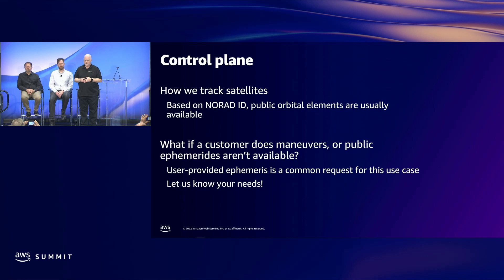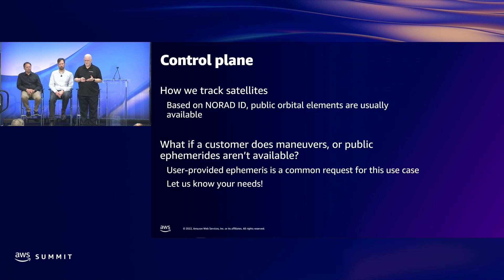Many customers ask us how we track satellites. Most satellites have a published NORAD ID, and orbital elements for those satellites are available from a number of public sources. Those orbital elements, also known as ephemerides, allow us to track satellites and predict the times they'll be in range for each of our AWS Ground Station locations — and that's what drives the scheduling options you'll see on the Ground Station console. Sometimes customer satellites don't have publicly available tracking elements, or they may not be updated often enough, and for that use case we've been asked for a feature allowing customers to provide their own orbital elements.